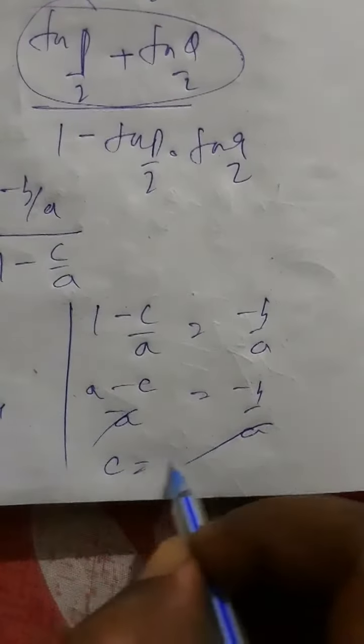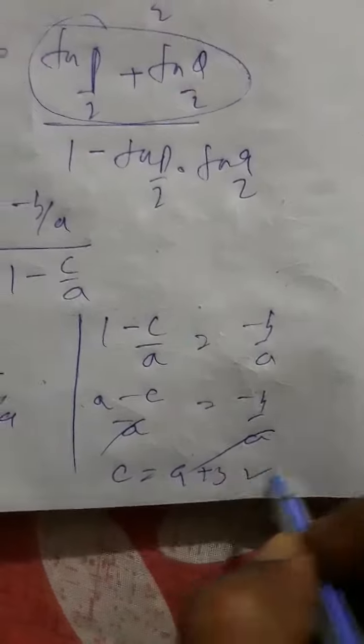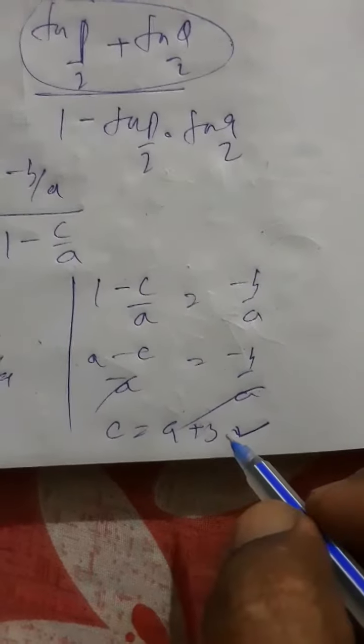Now, if you see properly, this is of the form C is equal to A plus B. So the correct answer is C is equal to A plus B.